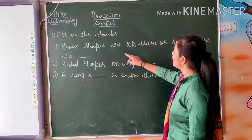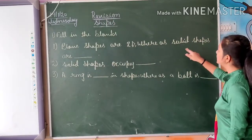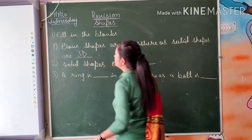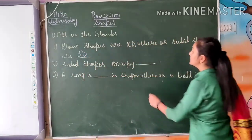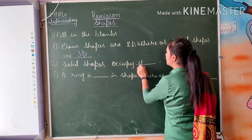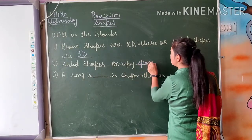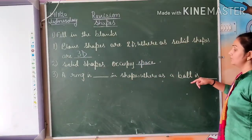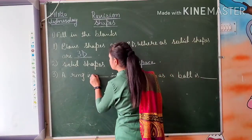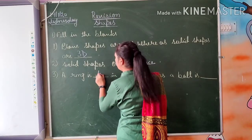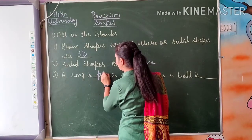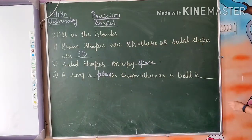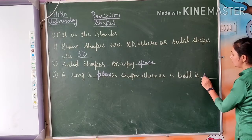In the first one we will fill: plane shapes are 2D, whereas solid shapes are 3D. Solid shapes occupy space. The ray is plane in shape, whereas a ball is solid. Now, because here we are talking regarding plane and solid shapes, in this way you will complete this.